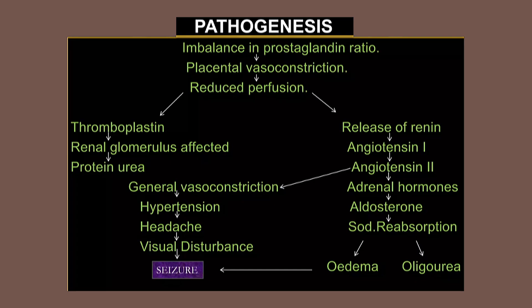Now we'll see the pathophysiology of eclampsia. It is a multi-system disorder that can lead to hypertension, proteinuria, edema, oliguria, and ultimately seizure and coma. First, there is an imbalance in the prostaglandin ratio, which leads to placental vasoconstriction, and this automatically leads to reduced placental perfusion.